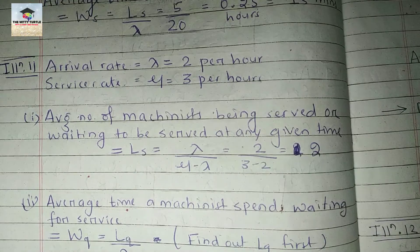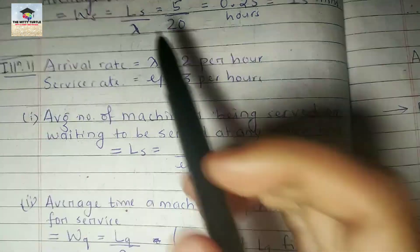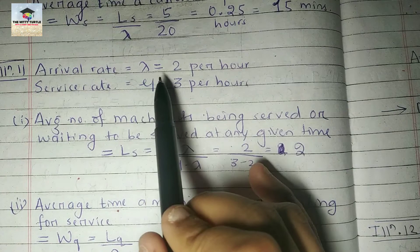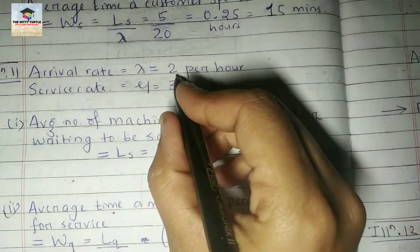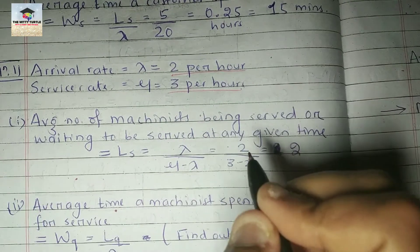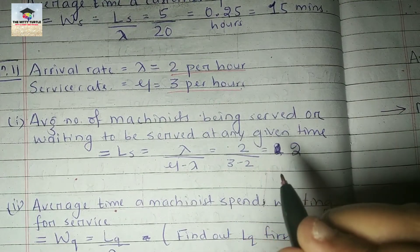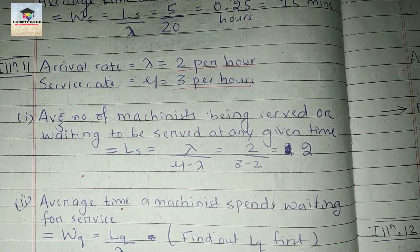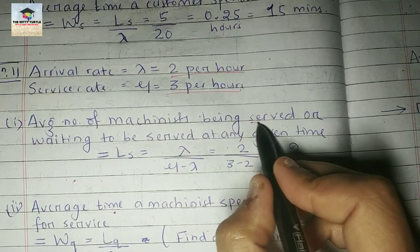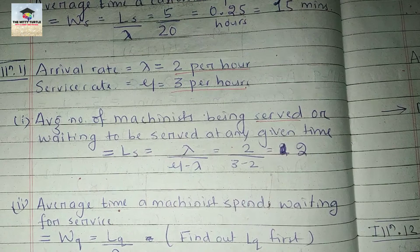So let's start with the answer. Arrival rate is lambda equals 2 per hour, and your service rate is 3 per hour. The first thing that has been asked is average number of machinists who are waiting to be served or who have already been served at any given time, so this is your Ls.